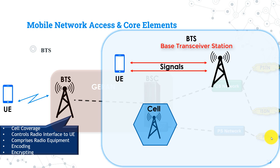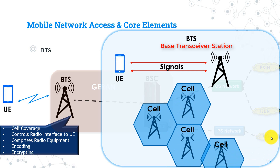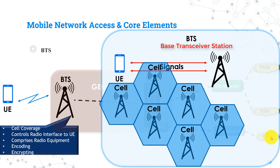In any GSM network, there are many BTSs to cover the whole PLMN area. The BTS controls the radio interface between itself and the UE, monitoring signal transfer to and from the mobile. It has radio equipment required for sending and receiving signals, such as transceivers and antennas. It also encodes and encrypts data before sending it over the air interface to the user equipment.